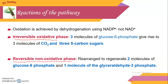In the oxidative phase, dehydrogenation reactions use NADP+, not NAD+. During cellular respiration, NAD+ is mostly used in the electron transport chain. But here, in the pentose phosphate pathway, during dehydrogenation reactions, NADP+ is used.